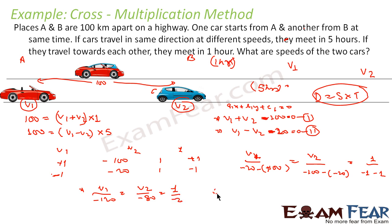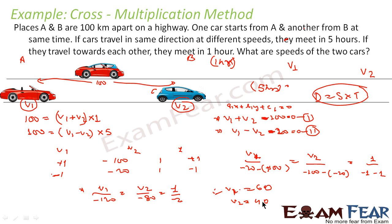Solving: V1 equals 120 divided by 2, that is 60, and V2 equals 80 divided by 2, that is 40. So V1 equals 60 km/h and V2 equals 40 km/h — those are the speeds of both cars.